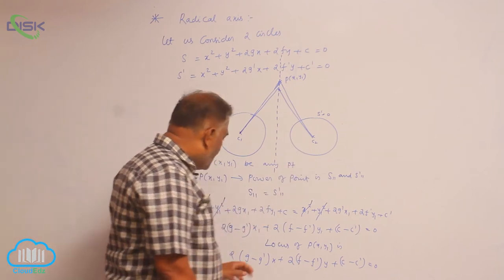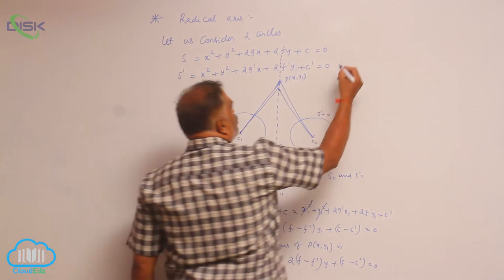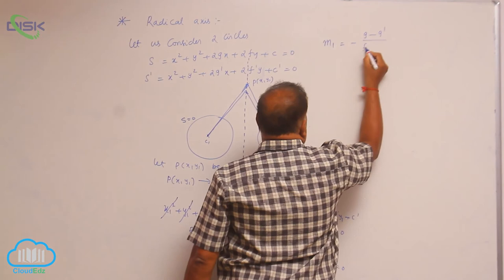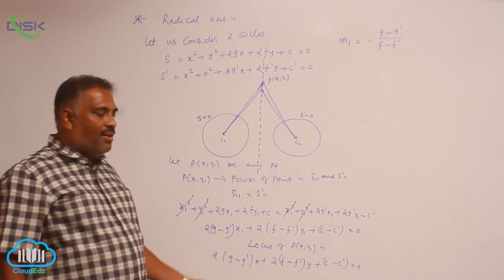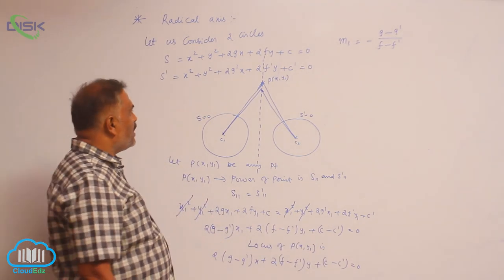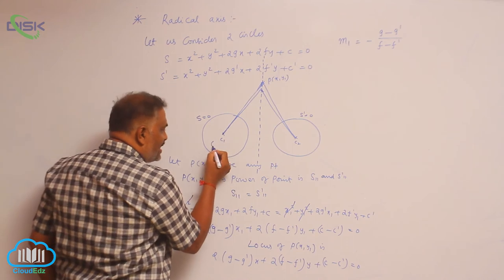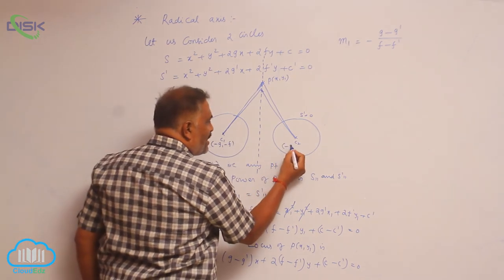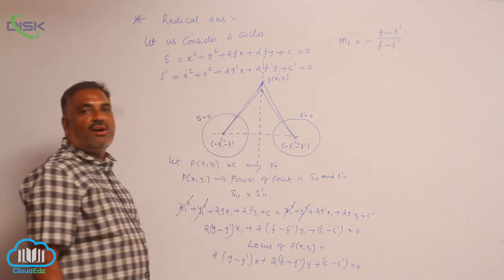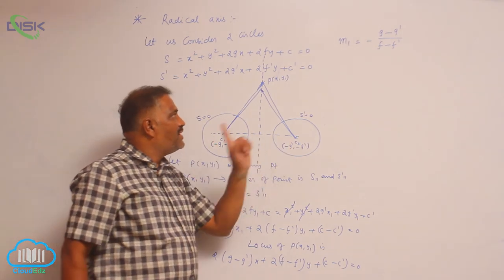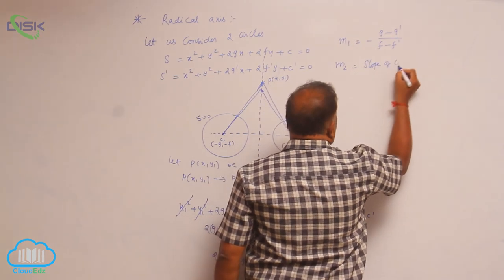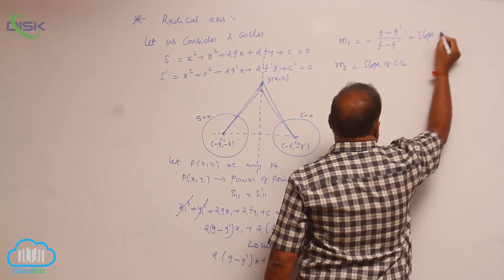Now, calculate the slope of this straight line. The slope m₁ = −(g − g')/(f − f'), since for Ax + By + C = 0, the slope is −A/B. The centers of the two circles are (−g, −f) and (−g', −f'). Joining these two centers gives the line of centers, whose slope m₂ = (f − f')/(g − g').